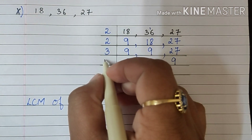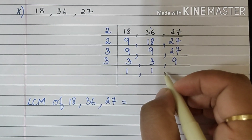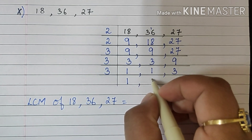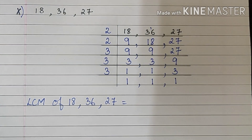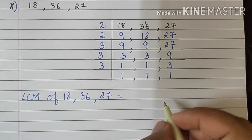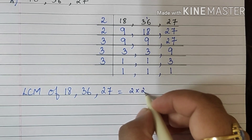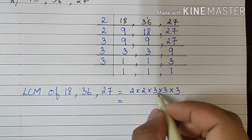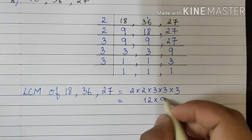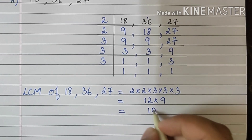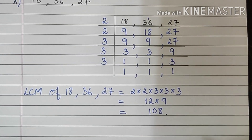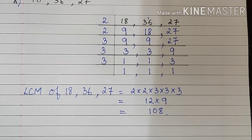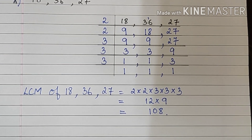Again all are divisible by 3. 3 1s are 3, 3 1s are 3, and 3 3s are 9. Again this is divisible by 3. 3 1s are 3. So let's note down the factors, which is 2 multiplied by 2 multiplied by 3 multiplied by 3 multiplied by 3 multiplied by 3. 2 2s are 4, 4 3s are 12, and 3 3s are 9. 12 into 9 is 108. So with this we end our practice set here. This was question number 1 of practice set 13. We will do question number 2 in the next video. Thank you.